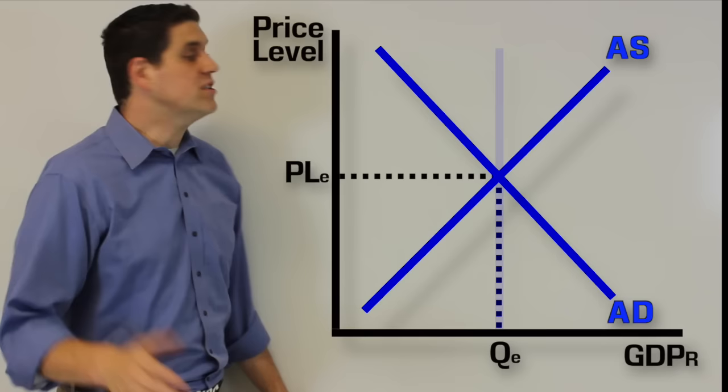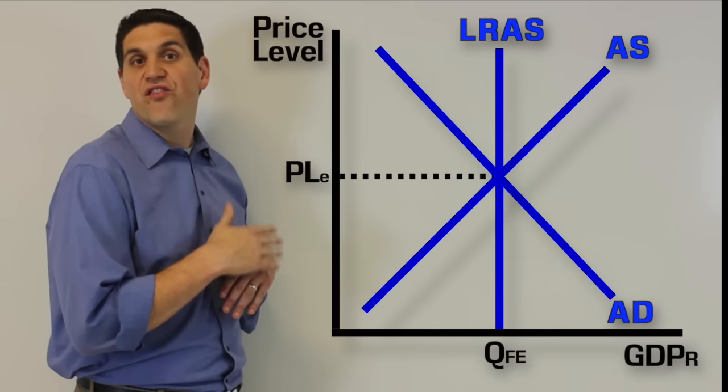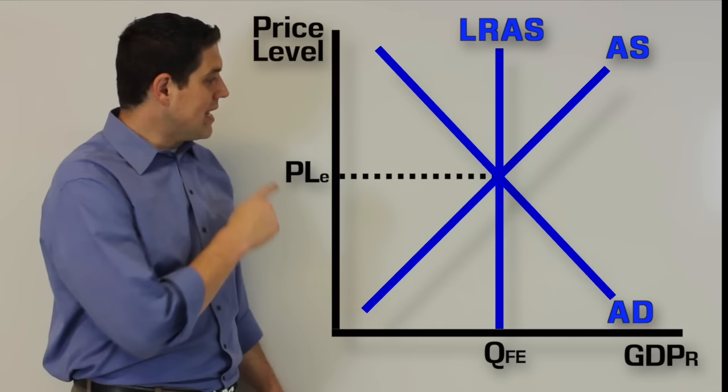Let's assume we're here in the economy at full employment. It means our economy is at full output with 4% to 6% unemployment. The vertical line represents the long run aggregate supply, and equilibrium is right there, so we're at full employment.